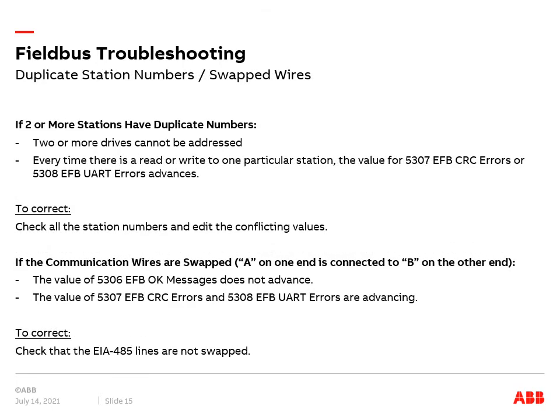Let's talk about duplicate station numbers or swapped wires on a network. If two or more stations have duplicate numbers, two or more drives cannot be addressed. Every time there's a read or write to one particular station, the value for 5307 EFB CRC errors or 5308 EFB UART errors advances.